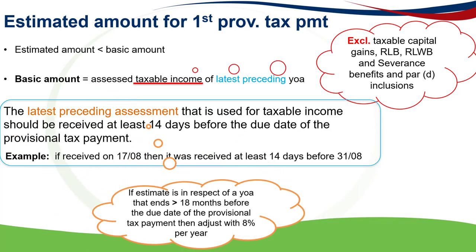If the estimate is in respect of a year of assessment that ends more than 18 months before the due date of the provisional tax payment, then you need to adjust the estimate with 8% per year from the end of the latest preceding year of assessment selected. The 8% is not cumulative, so if for example two years have passed since the end of the latest preceding year of assessment, then the estimate is increased by 16%.